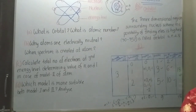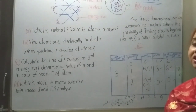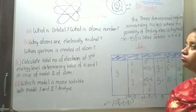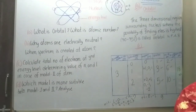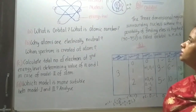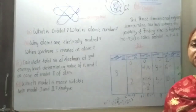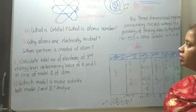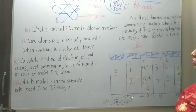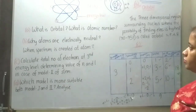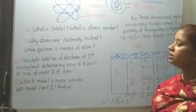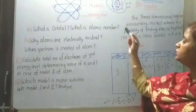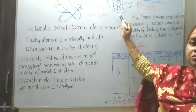You know that the Rutherford atom model had some limitations. And to solve these limitations, scientist Niels Bohr proposed a new model in 1913. Bohr atom model is more suitable — that means model 2 is more suitable, and model 2 is the Bohr atom model.